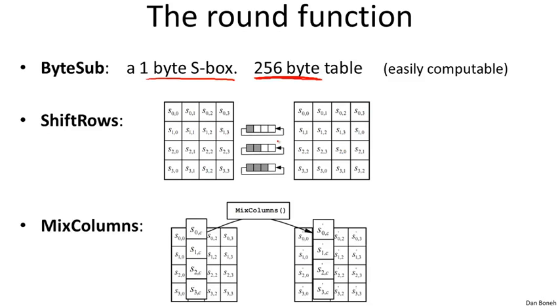And the last thing we do is mix columns, where literally we apply a linear transformation to each one of these columns. So there's a certain matrix that multiplies each one of these columns, and it becomes the next column. So this linear transformation is applied independently to each one of the columns.